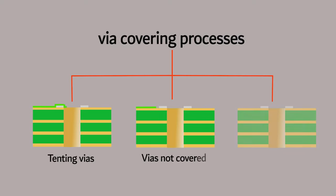There are three main methods for via covering processes: tenting vias, vias not covered, and plug vias with solder mask.